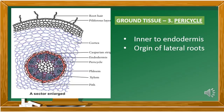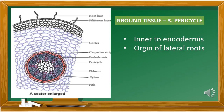The next ground tissue is the pericycle. It is next to the endodermal layer and is also a single layer. This layer helps in the origin of lateral roots — that is, lateral roots arise from the pericycle.